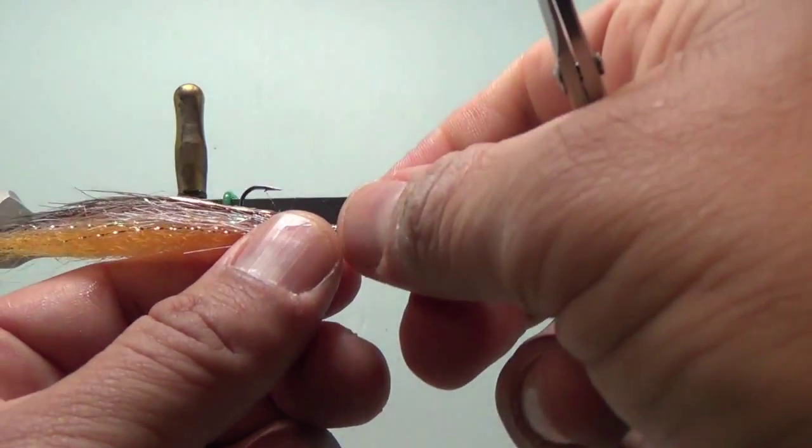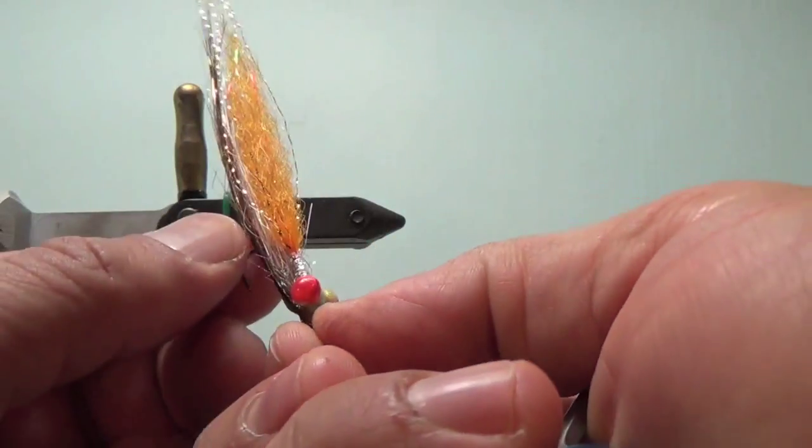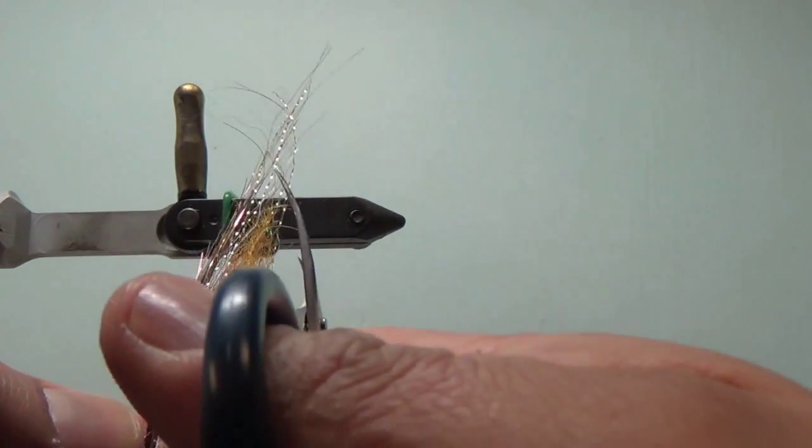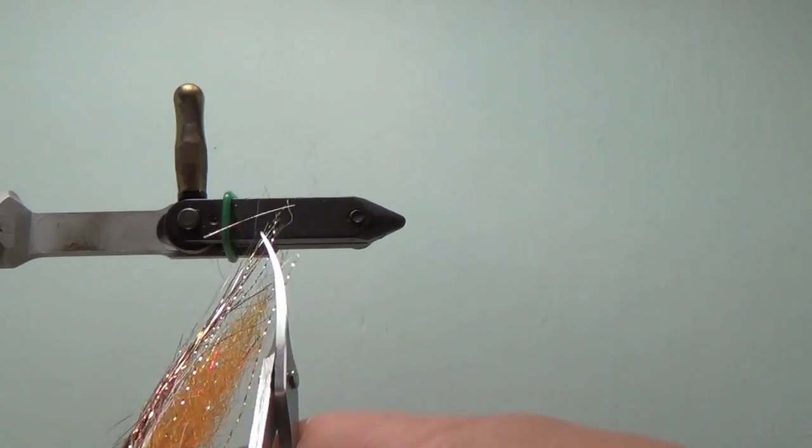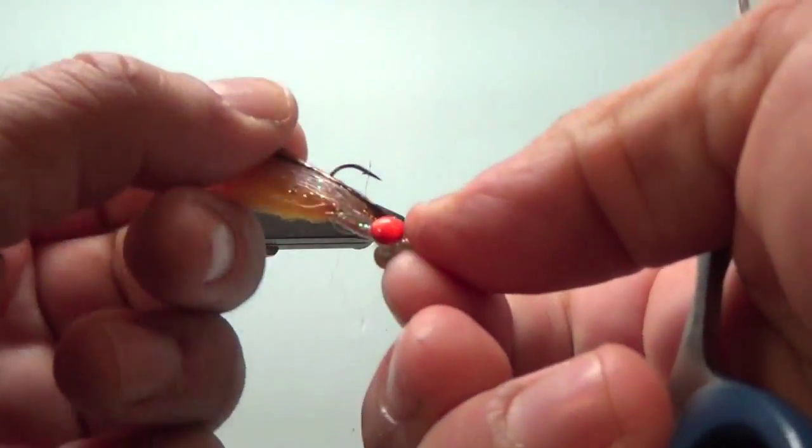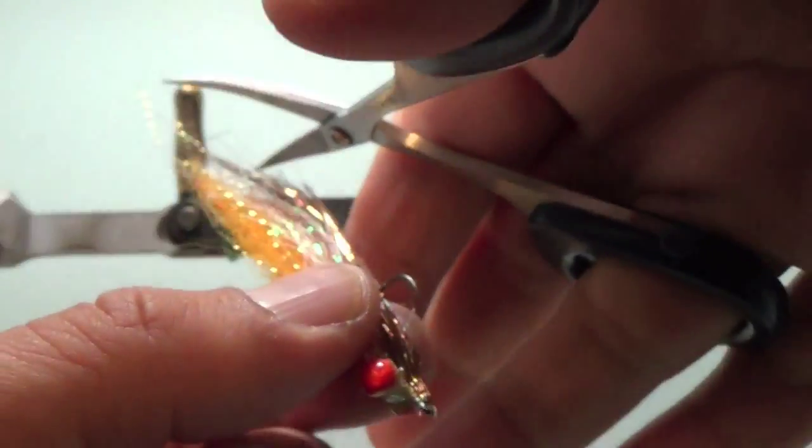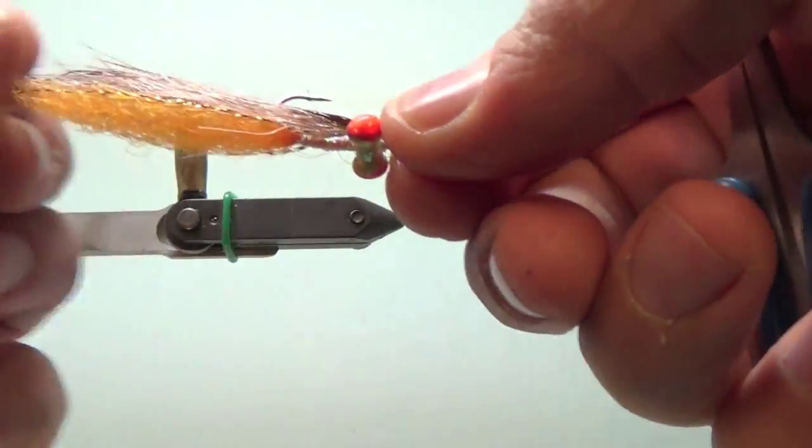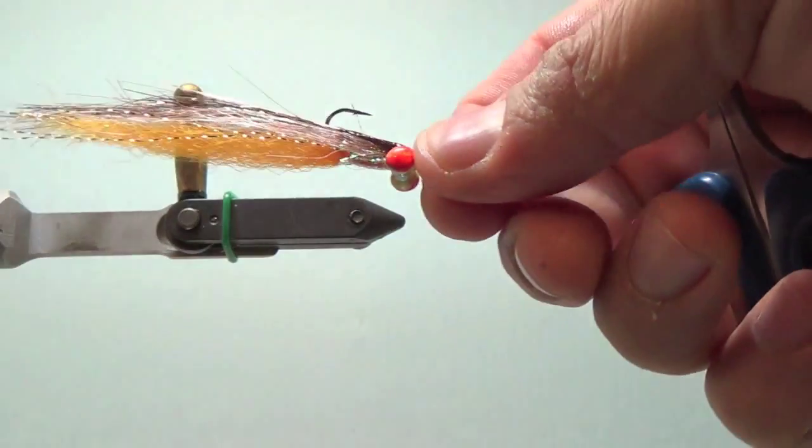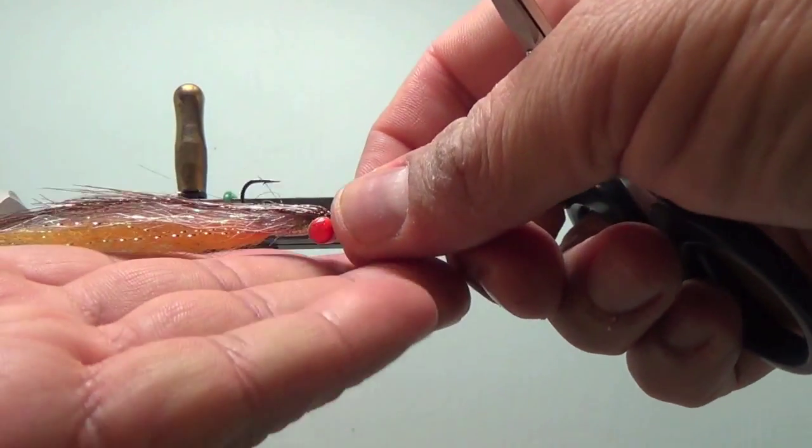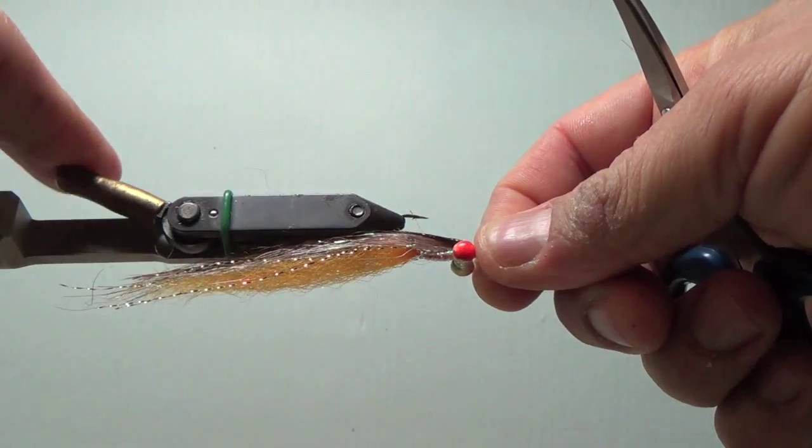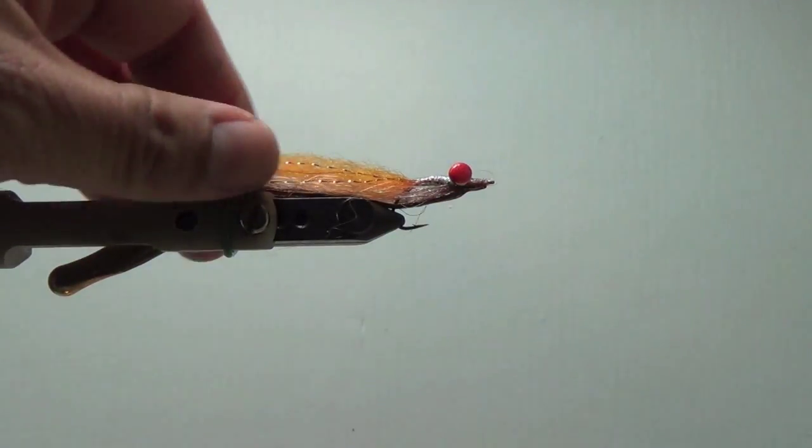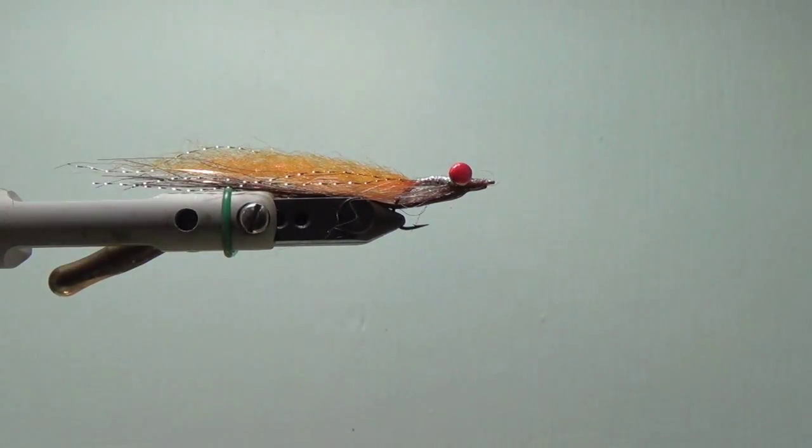What I'll then do is I'll go ahead and trim off the back end. Really nice to use tapered scissors for that. And there you go. A completed Liberace Clouser ready for some action in the bay.